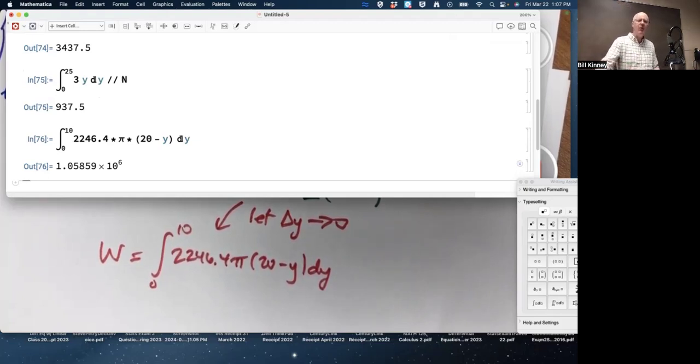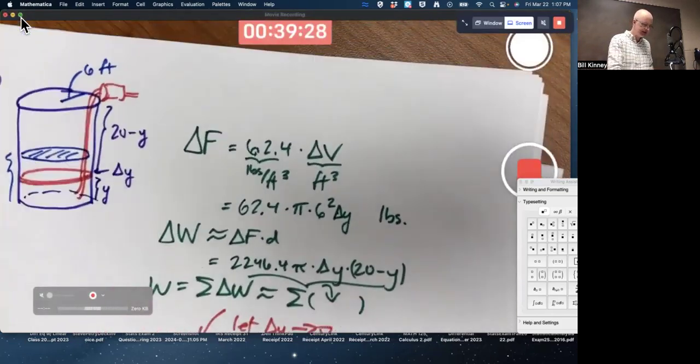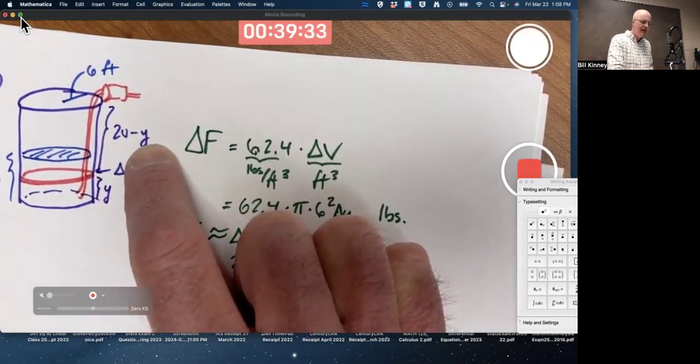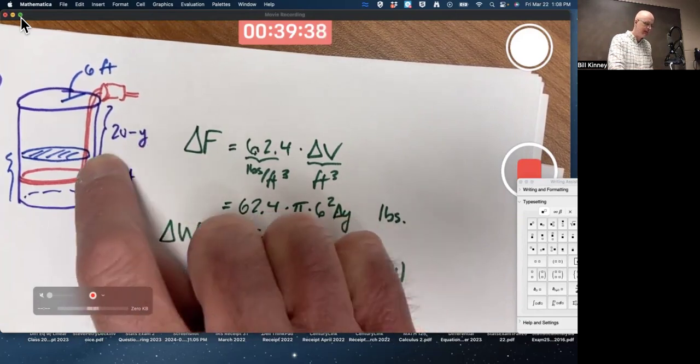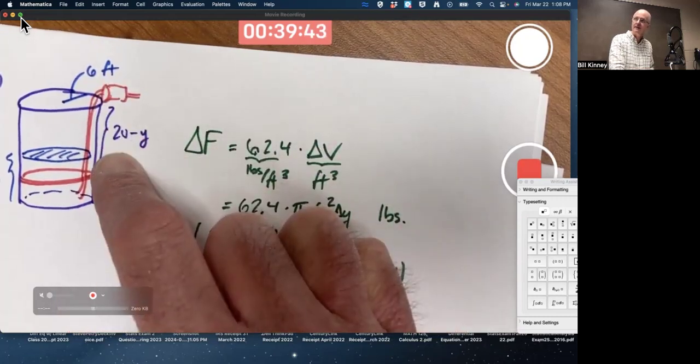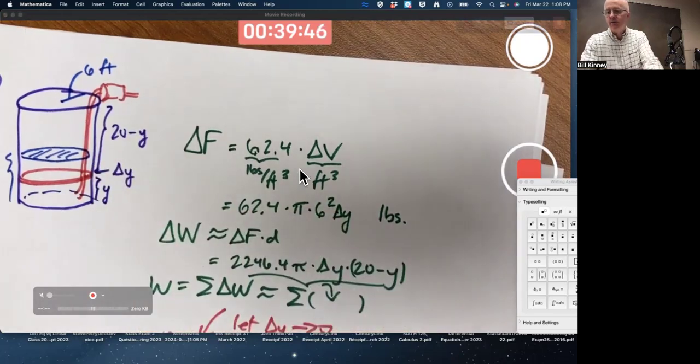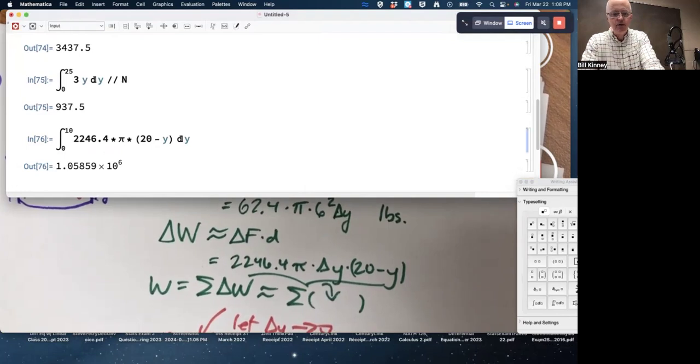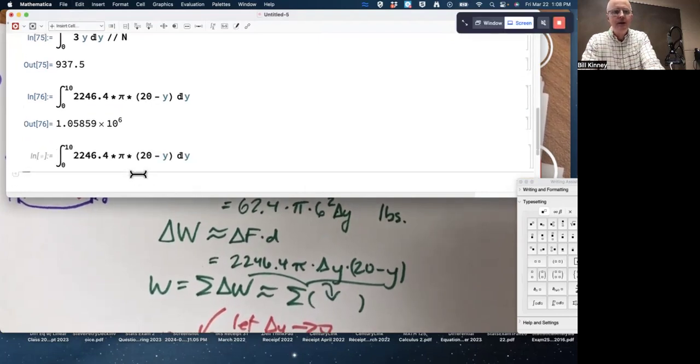What if we were taking y to be not the height of the slice of the water, but its distance from the top? If this were a y instead, y would not go from zero to 10 in that case. It would go from 10 to 20, if y were a downward distance here from the top. You can confirm that. If I were to do this integral, replace the 20 minus y with just a y, if I were to do from zero to 10, it gives the wrong answer.